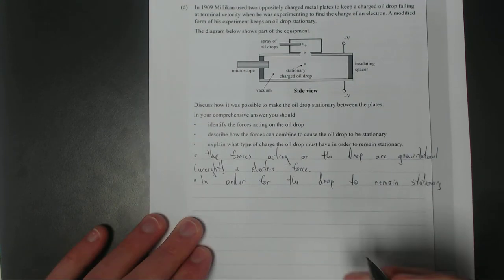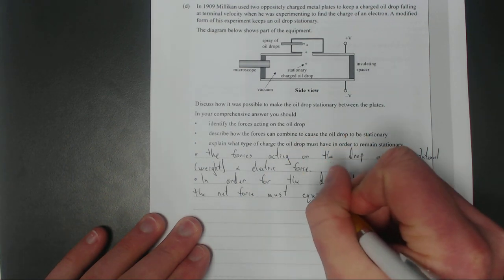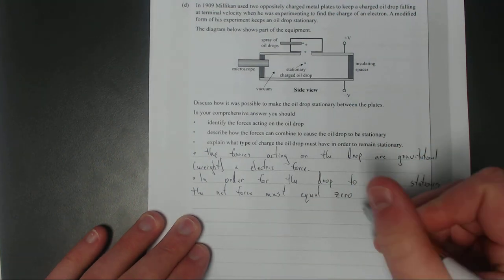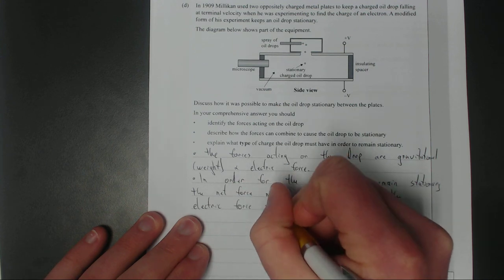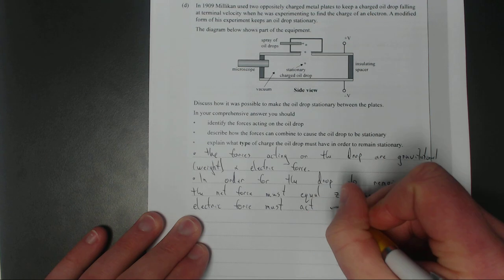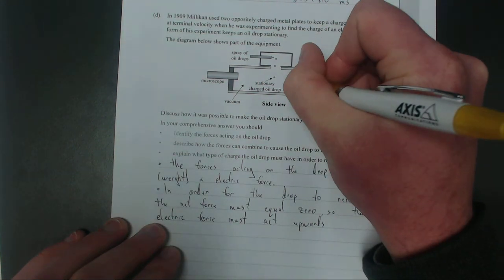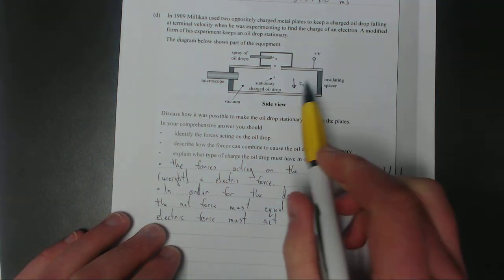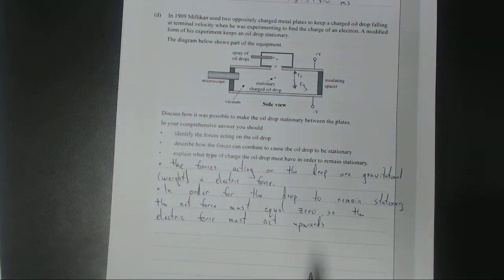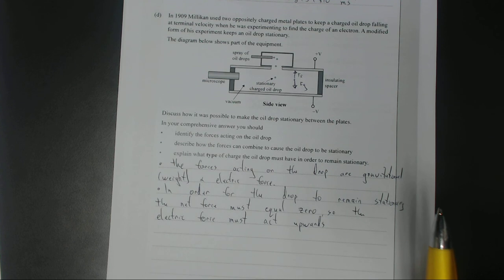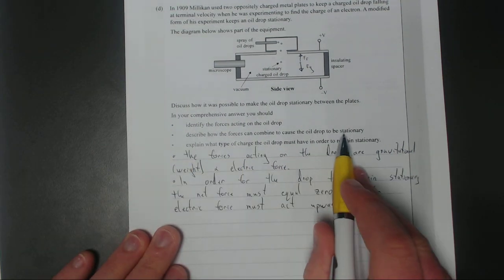In other words all the forces need to be balanced, so the electric force must act upwards. So what we have here is if we have the drop here, we'll have Fg pointing down. So in order for it not to accelerate you need an Fe, an electric force acting upwards. So these vectors add together to equal zero, so zero net force which means it's either at a constant velocity or it's not moving at all.